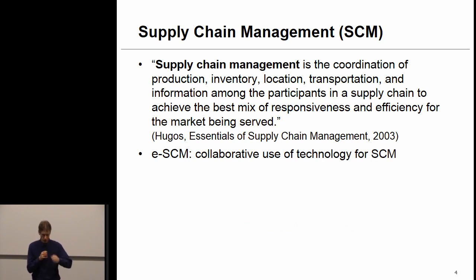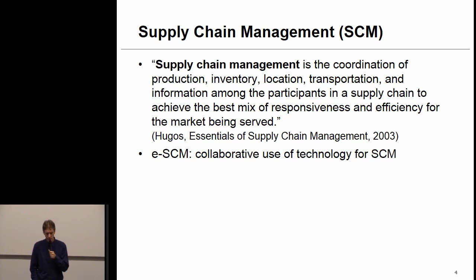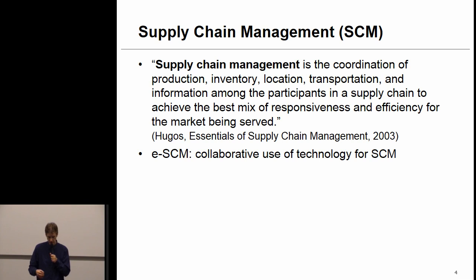What is supply chain management? Supply chain management is the coordination of production, inventory, location, transportation, and information among the participants in a supply chain to achieve the best mix of responsiveness and efficiency for the market being served. A lot of things need to be considered: the coordination, production, inventory, location, transportation, and also very importantly the information flow.